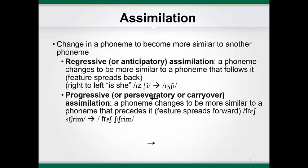Progressive assimilation, also known as perseveratory or carryover assimilation, occurs when a phoneme changes to become more like a phoneme that precedes it. It's called carryover assimilation because the feature of the earlier phoneme carries over onto a following phoneme, or progresses or perseveres onto a following phoneme. An example is when the alveolar s sound in "stream" becomes sh following the palatal fricative in the phrase "fresh stream." In English, anticipatory or regressive assimilation is much more common than progressive or perseveratory assimilation.